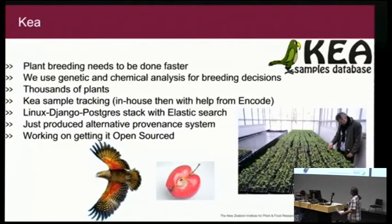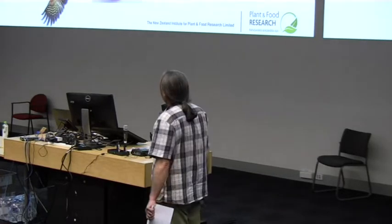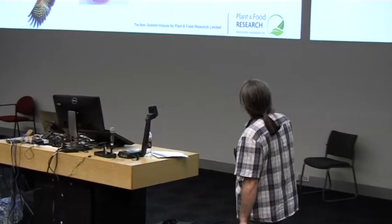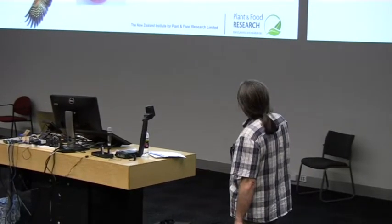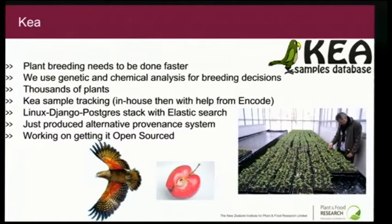Kia is something I'm hoping to have open-sourced. Any New Zealand organisation that wants to use it can have access because it's paid for mostly by the government, and I'd like to see it properly open-sourced in the near future. It's a Django application against Postgres, and we're running Elasticsearch indexes on it too. We're getting up to over a quarter of a million samples, and the scale is starting to get a little bit silly — thousands of rows linking to thousands of rows linking to thousands of rows.